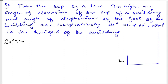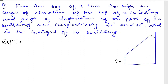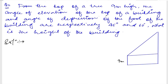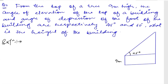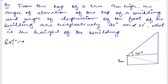The angle of elevation of the top of the building — let me draw that line. The angle of elevation of the top of the building is 45 degrees. And the angle of depression of the foot of the building is 60 degrees. So the angle of depression is 60 degrees, and I write this as 60 degrees.